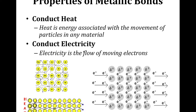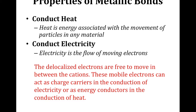Metallic bonds also conduct electricity. We can use this GIF to explain that. Electricity is the flow of moving electrons, and since metallic bonds have freely flowing electrons, we can conduct electricity through those freely moving electrons. Because of the sea of electrons, it is very easy for electricity to flow — therefore they are good conductors of electricity. The delocalized electrons are free to move in between the cations. These mobile electrons can act as charge carriers in the conduction of electricity or as energy conductors in the conduction of heat.